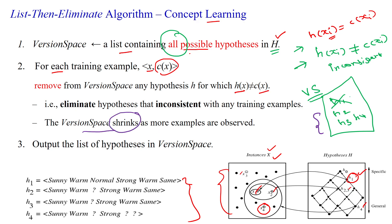the version space size is shrinking. So finally, you will get the consistent hypothesis available in the version space. This is about the List-Then-Eliminate algorithm. We will see an example in the next video.